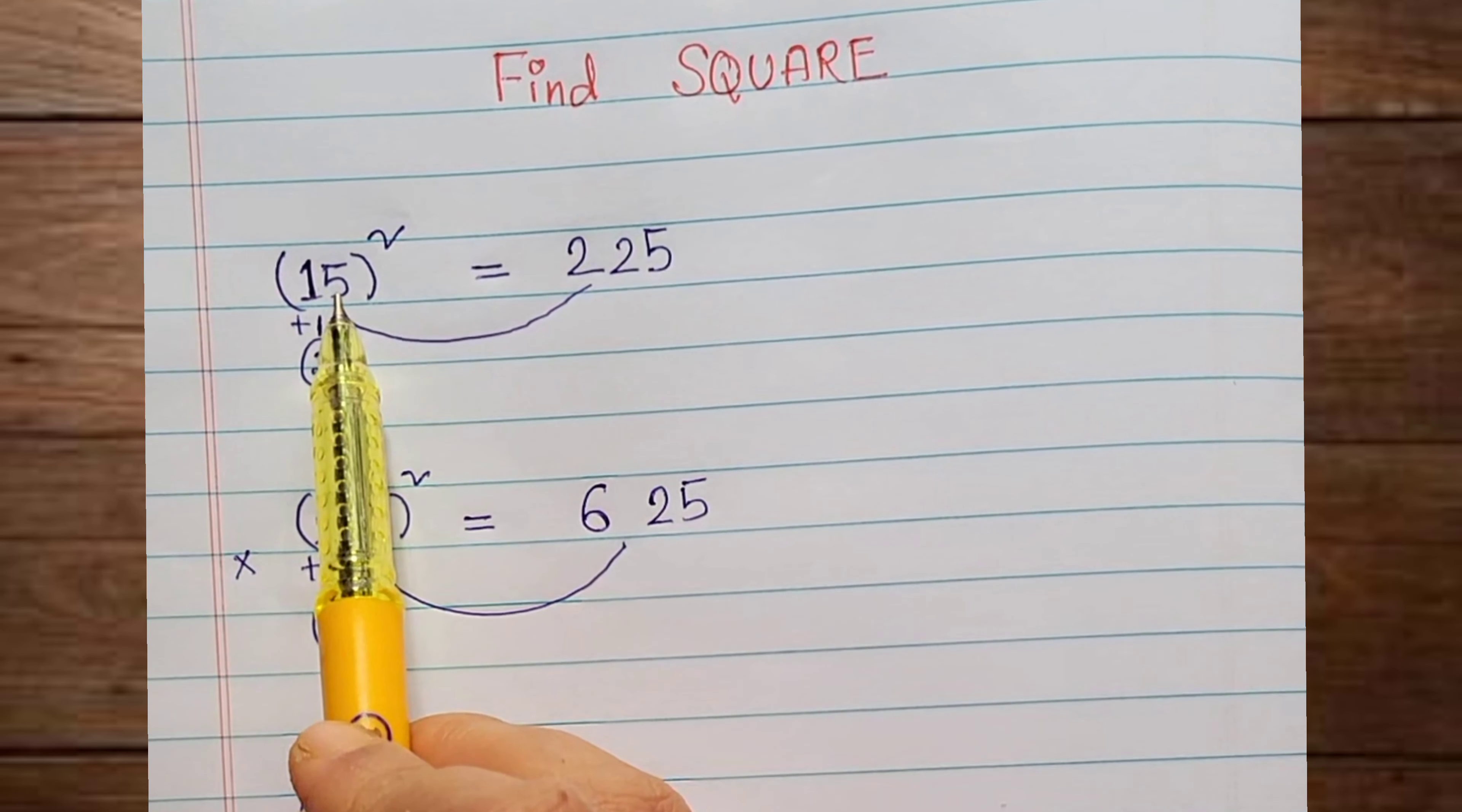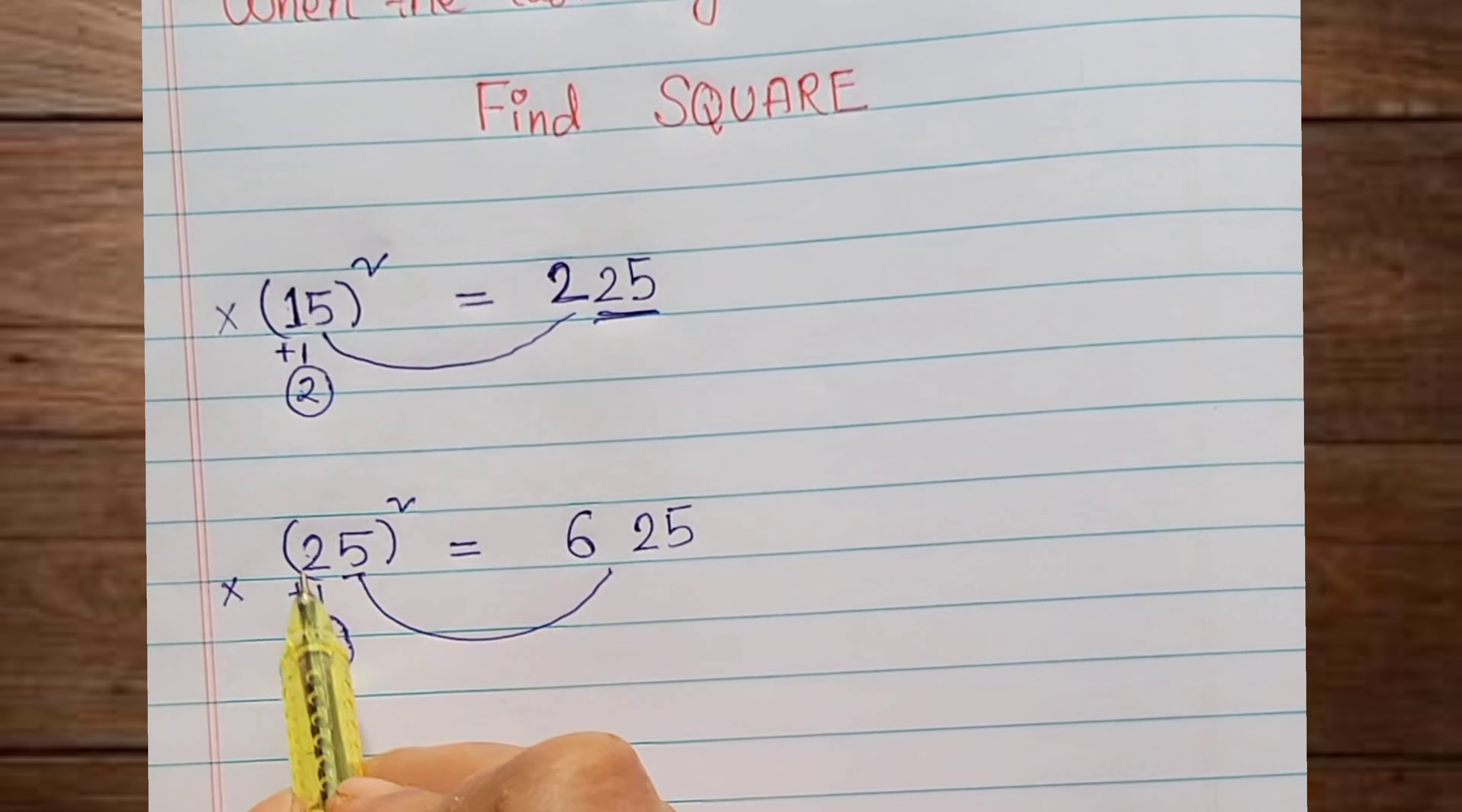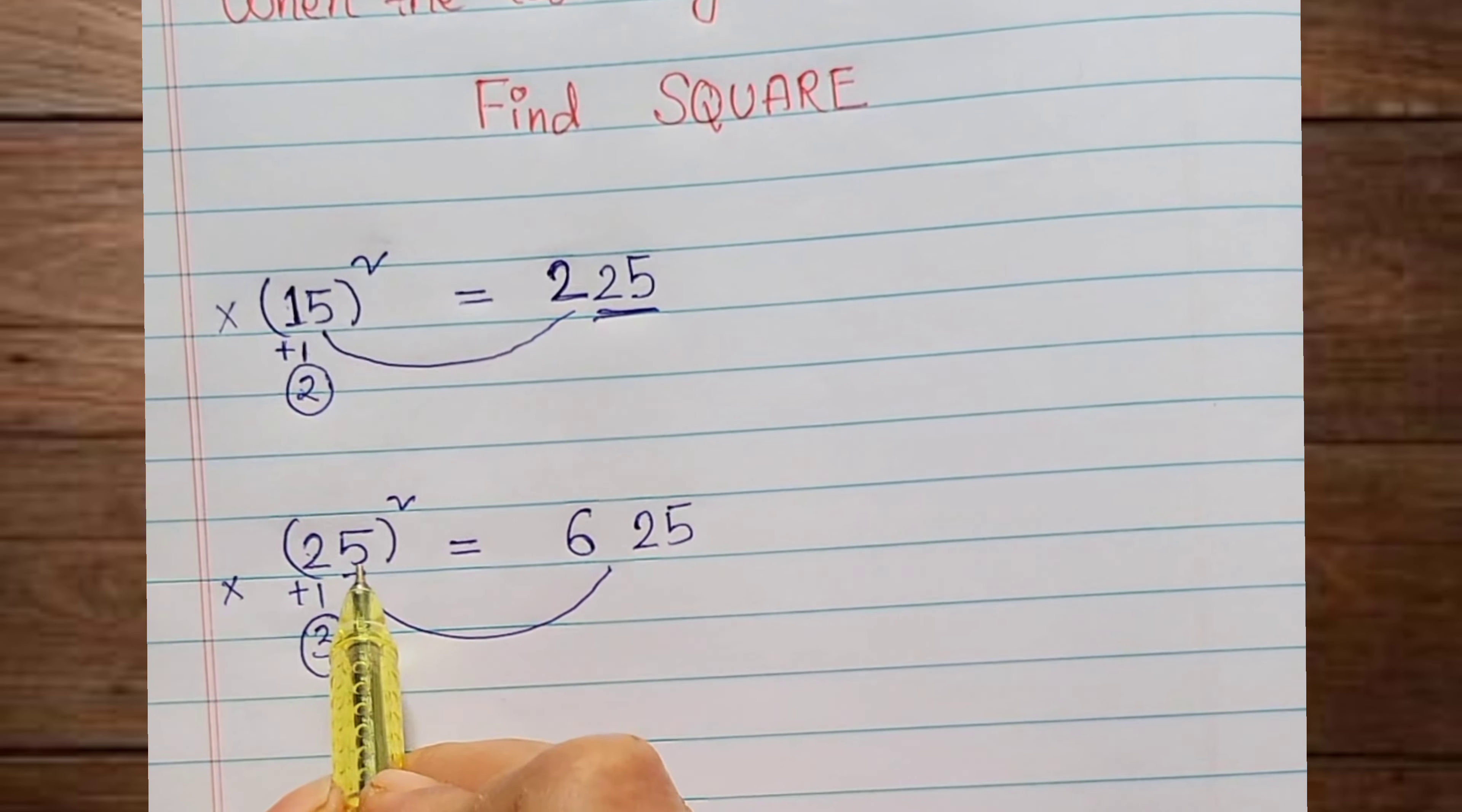First, 15 squared. Last digit is 5. We can write here 5 squared means 25. And in the tens position, 1 is here. We can add with 1. 1 plus 1 is 2, 1 into 2 we can multiply. Then we can find 2.